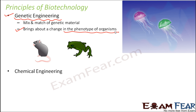The next principle is chemical engineering. The most important thing here is the maintenance of a sterile environment — sterile means completely clean, free of any sort of contamination. In biotechnology, we talk about the creation or production of useful products such as antibiotics, enzymes, and useful acids. For the preparation of all of these, many microbes play a very important role, but it needs to be ensured that only the useful ones are allowed to grow and not the harmful ones.